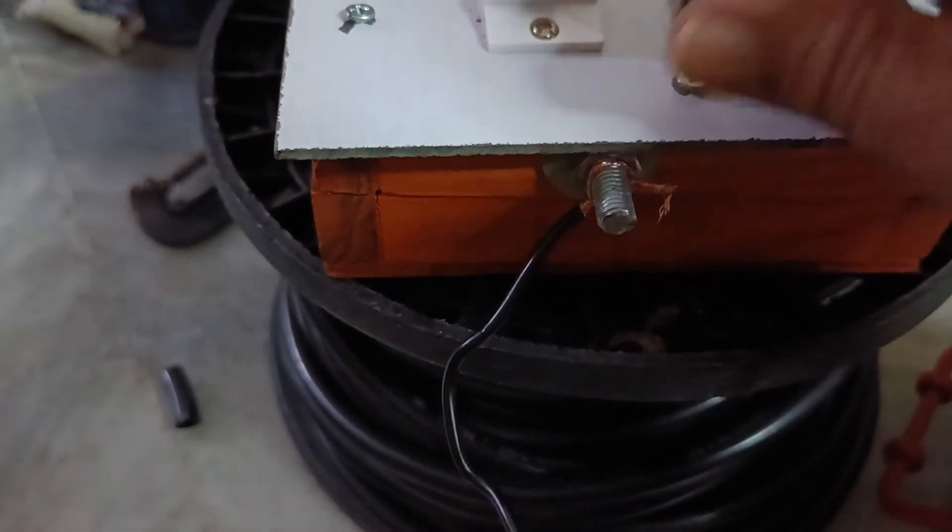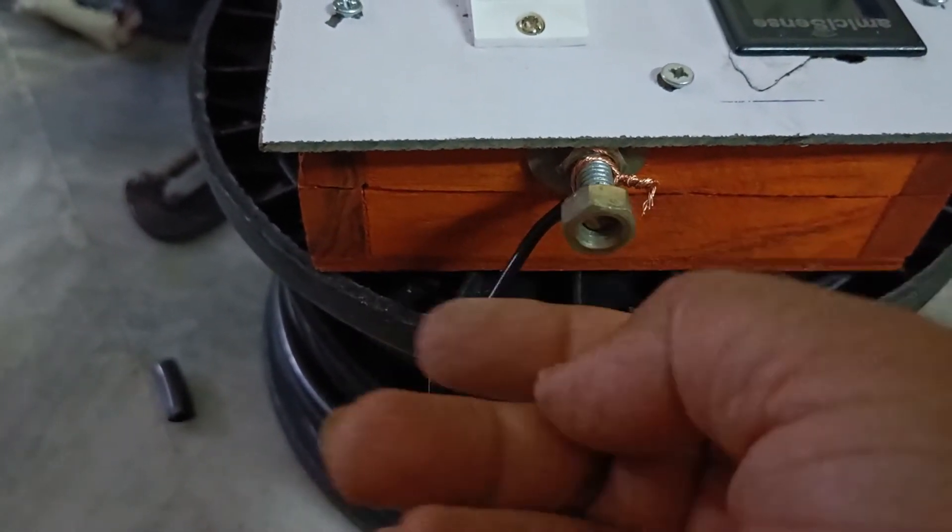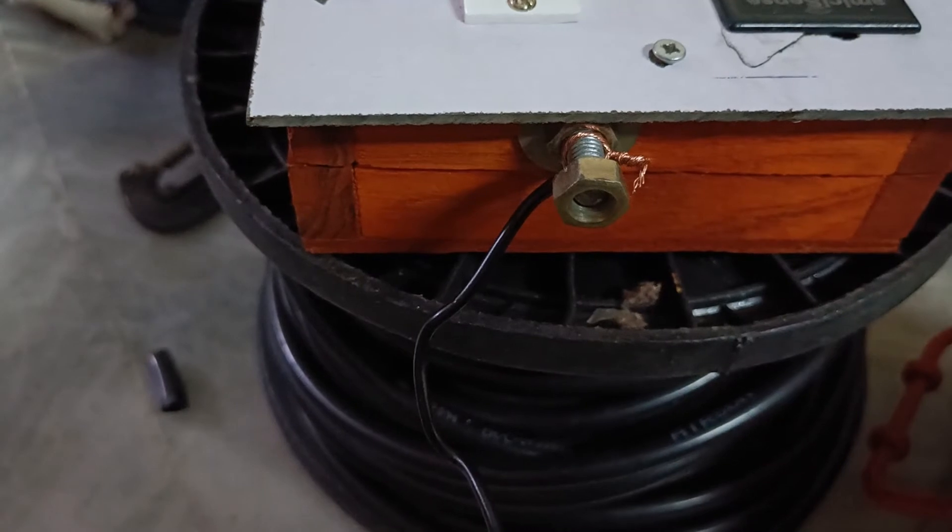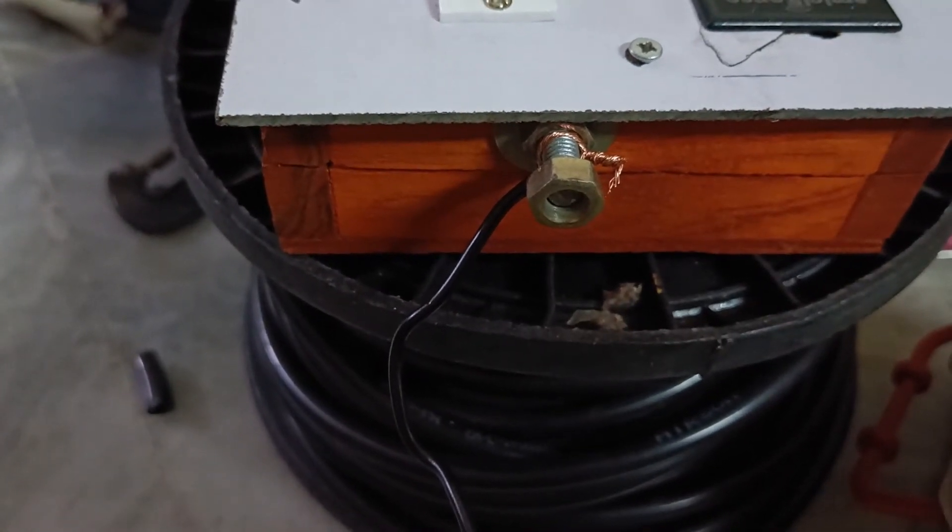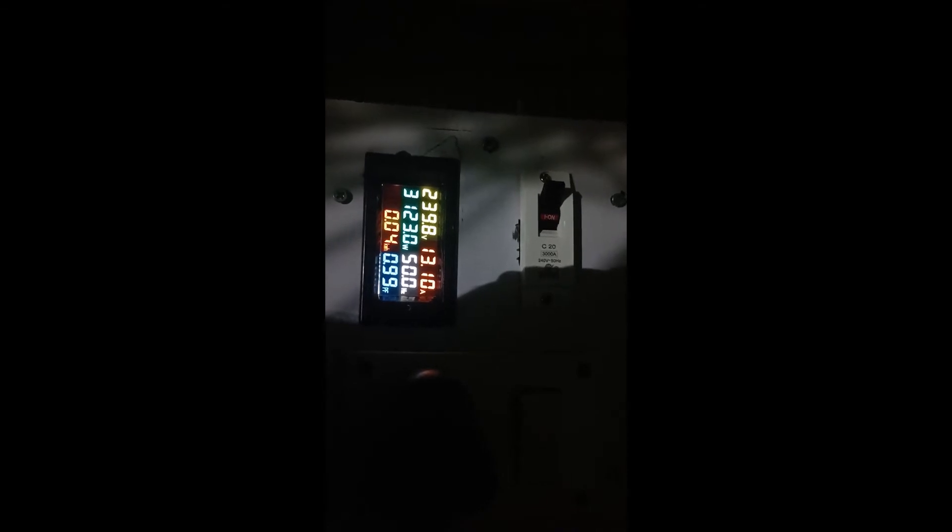So here I will be connecting this wire and putting this bolt and I will be taping it so that it stays firm. Now the connections are made, you can see the values, it's taking around 13.10 ampere. You see now the kilowatts is also moving, so it's success.